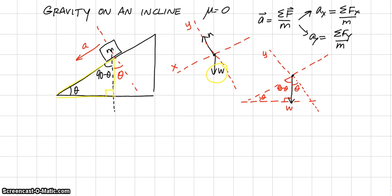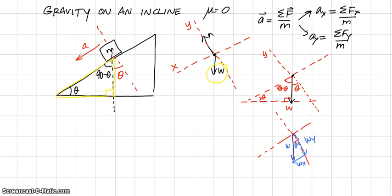Now that I know the angle theta of the incline is the angle the weight vector makes with the y-axis, I can find the components. Drawing the weight vector with the y-axis and x-axis, and angle theta, I have two components: the component in the y-direction and the component in the x-direction. The x-component is opposite theta, w is the hypotenuse, and the y-component is adjacent to theta.